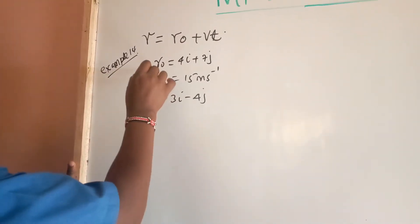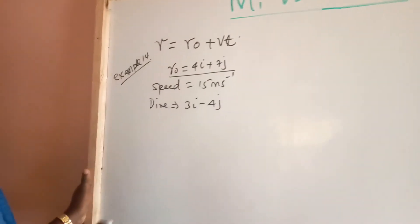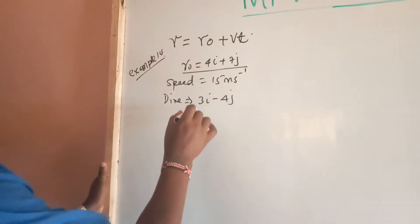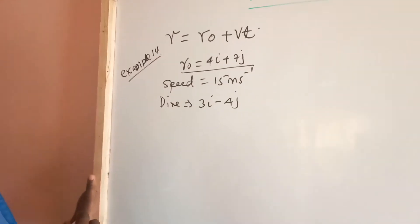We must note this one as a starting point. There is the speed there, and of course the speed is the magnitude of the velocity. And the direction is 3i minus 4j.